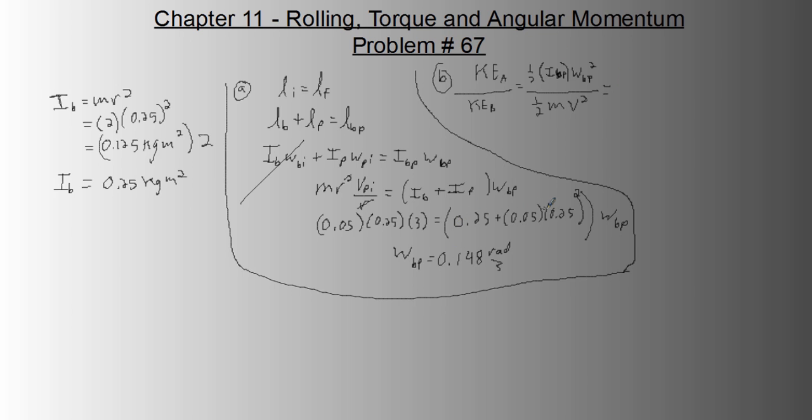So, I_BP is this, so I'm not going to rewrite this. I'm just going to go one half times, draw an arrow here, to everything in the parentheses here, times 0.148 squared over one half, and the mass of the putty is 0.05, and the velocity was 3 squared. That ratio is tiny, 0.012346. So basically, 1.2% of the kinetic energy is still in the system.